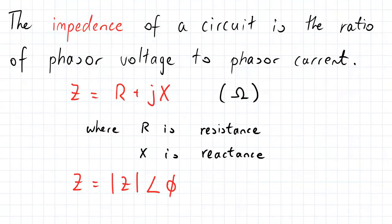So therefore, it's going to be the ratio of phasor voltage to phasor current. And since it is in the frequency domain, it follows that it is a complex number.